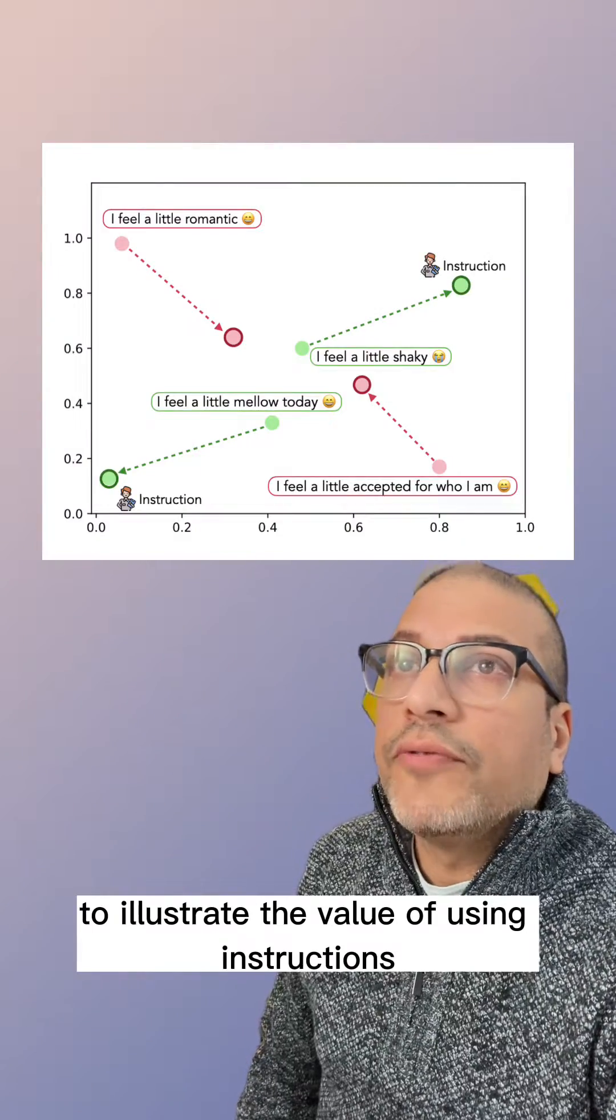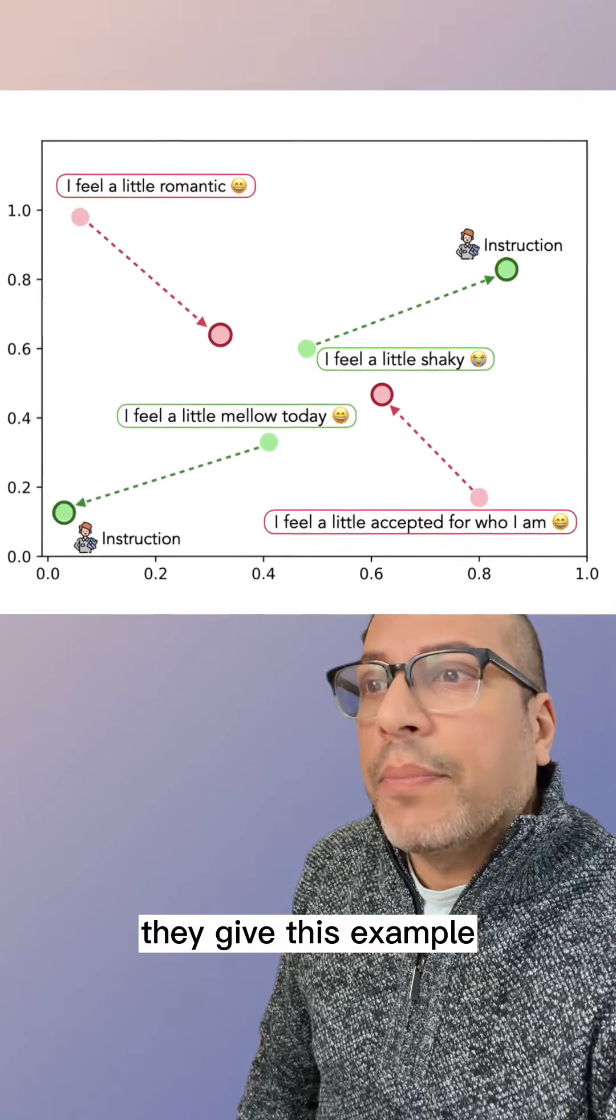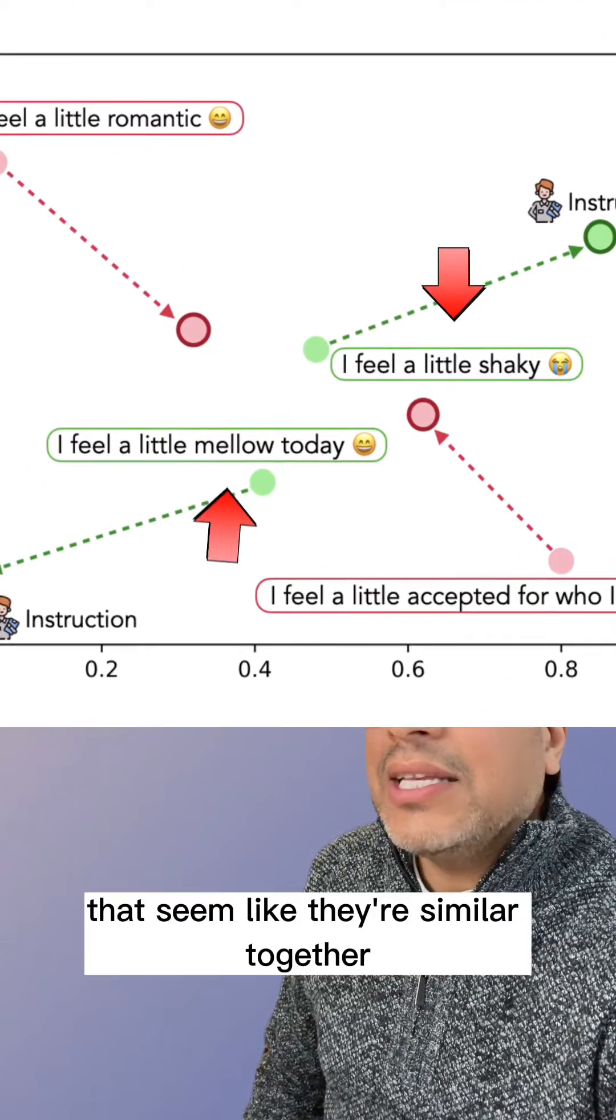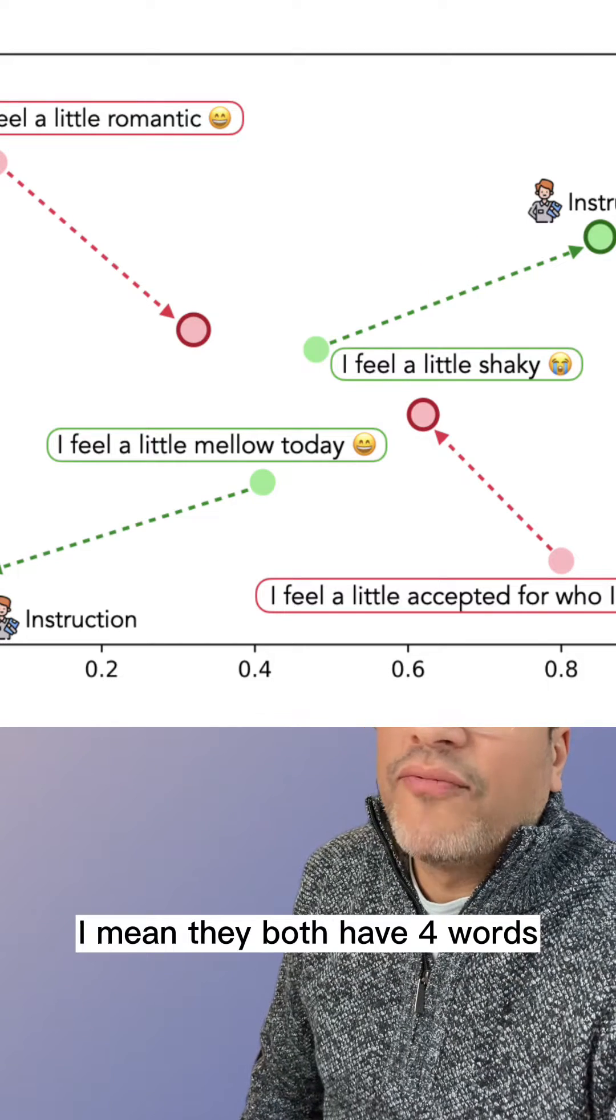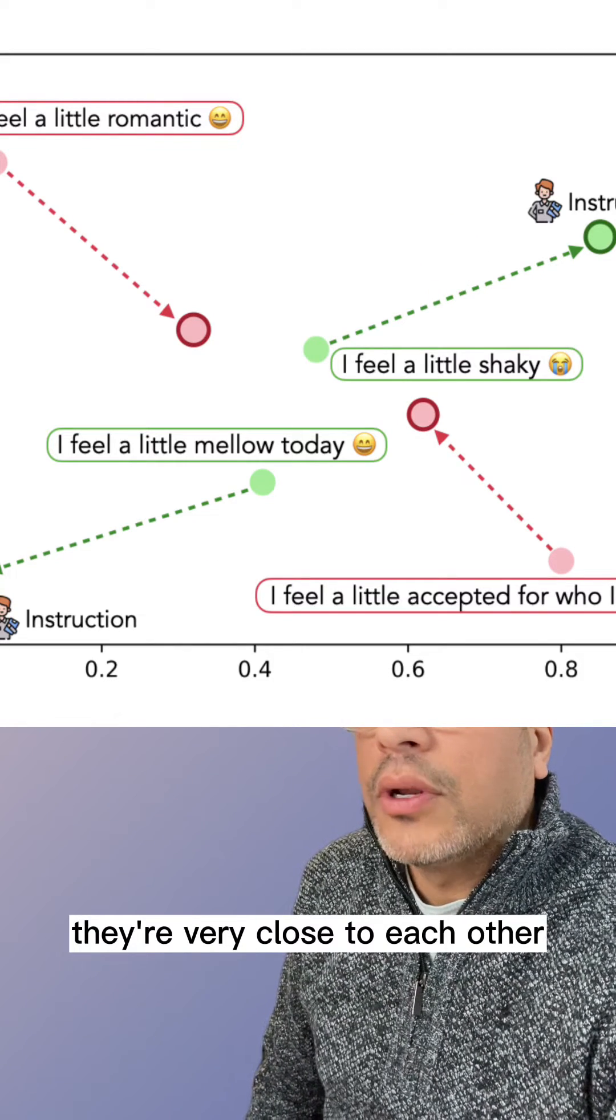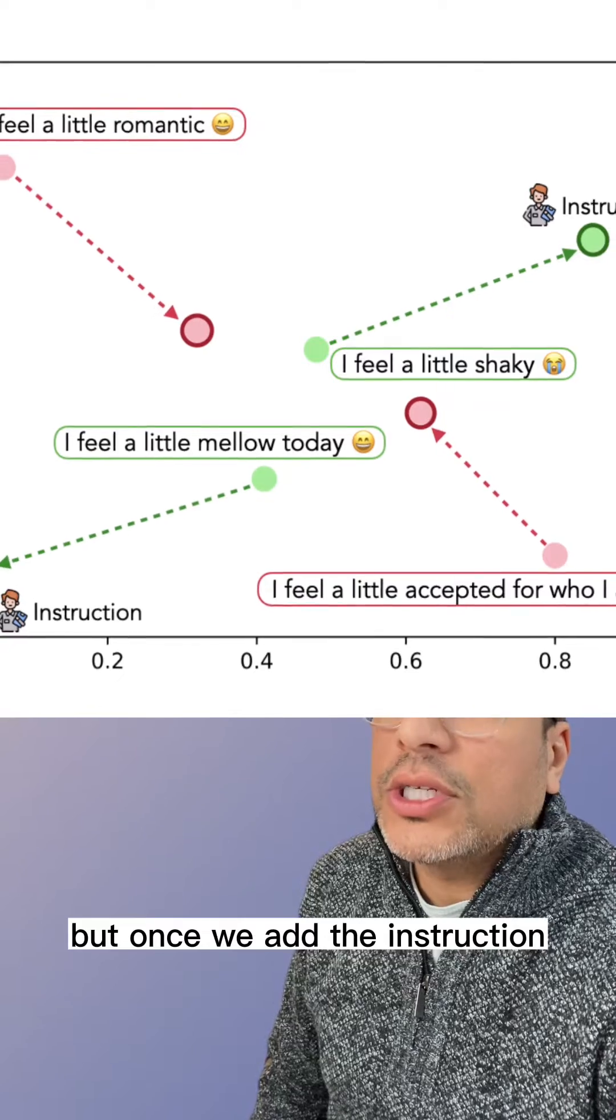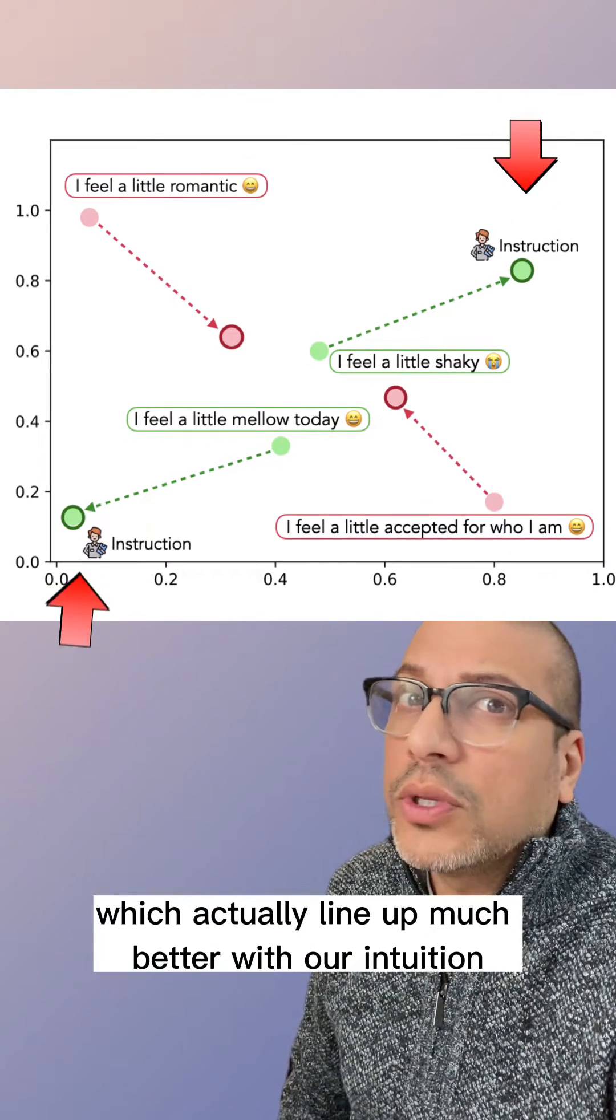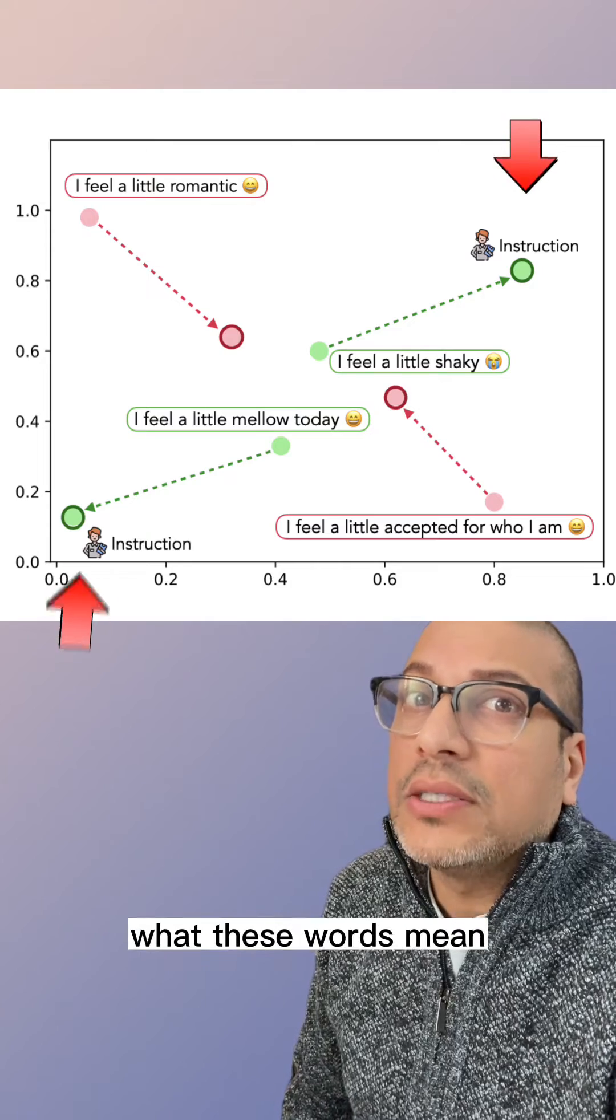To illustrate the value of using instructions, they give this example where we see two phrases that seem similar when we're not using instruction. They both have four words and are very close to each other, but once we add the instruction, the embeddings move farther apart, which actually lines up much better with our intuition of what these words mean.